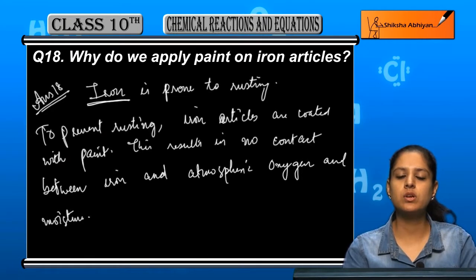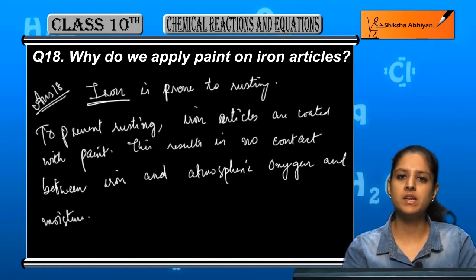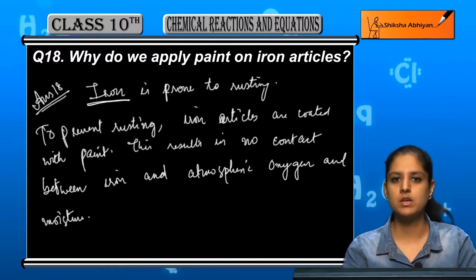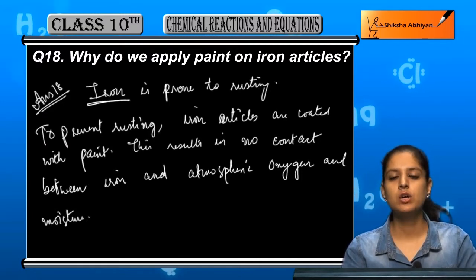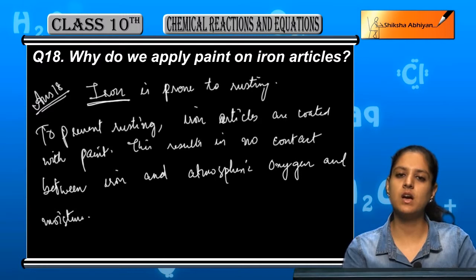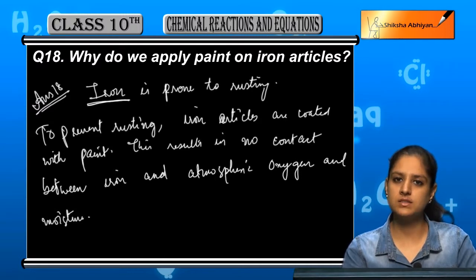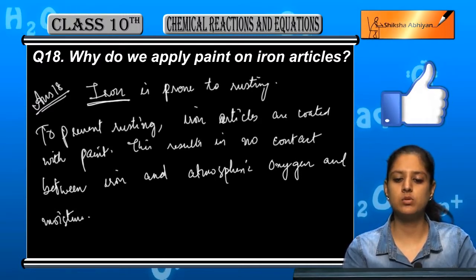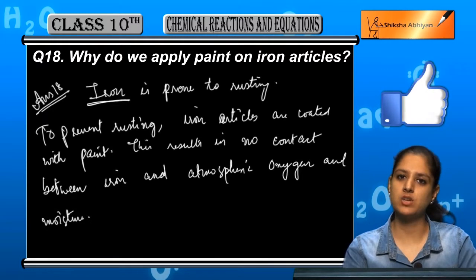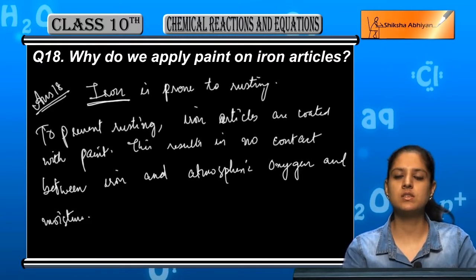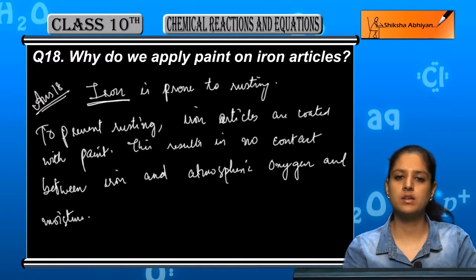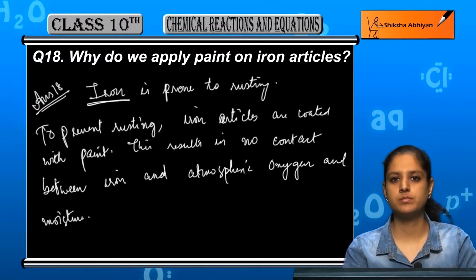This is what happens if we give a coating of paint — the iron material is not in contact with the atmosphere. This is the reason why iron articles are painted and coated with paint.